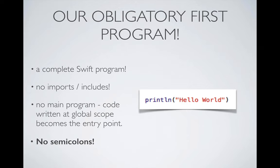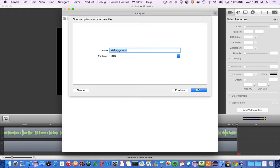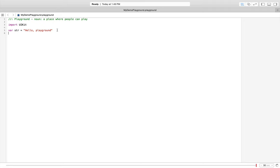Now let's look at some of the features of the Swift language. I want to expose you to some of the basics, and we're going to do this by going right into Xcode and creating what's called a playground. A playground allows us to simply doodle or interactively play around with the Swift language and try things out. I'm going to switch over to Xcode and create a new playground — I'll call this my demo playground.